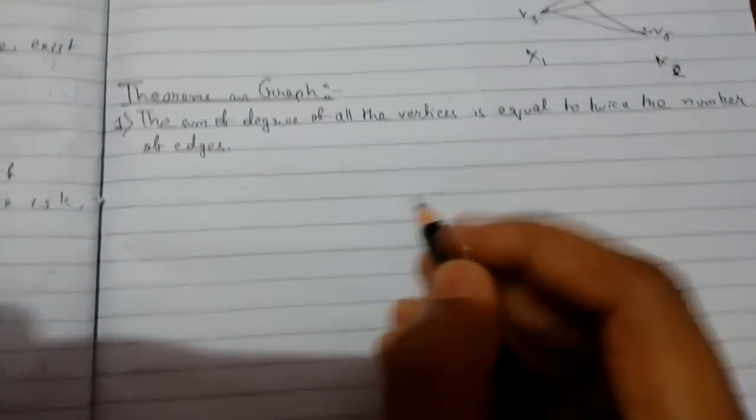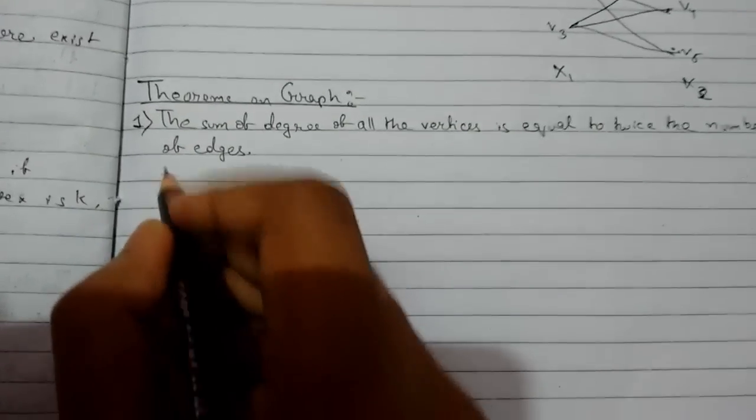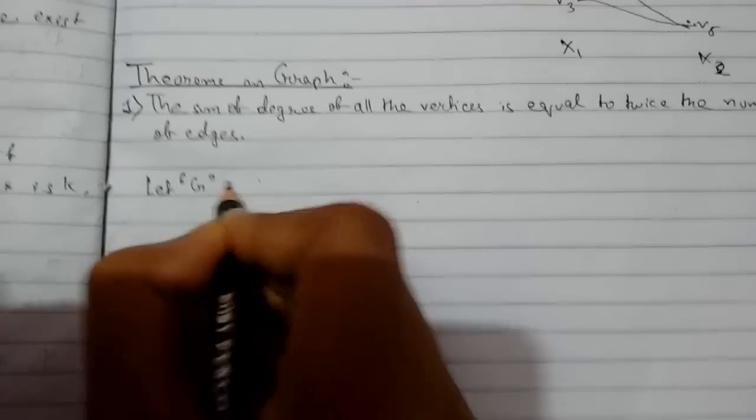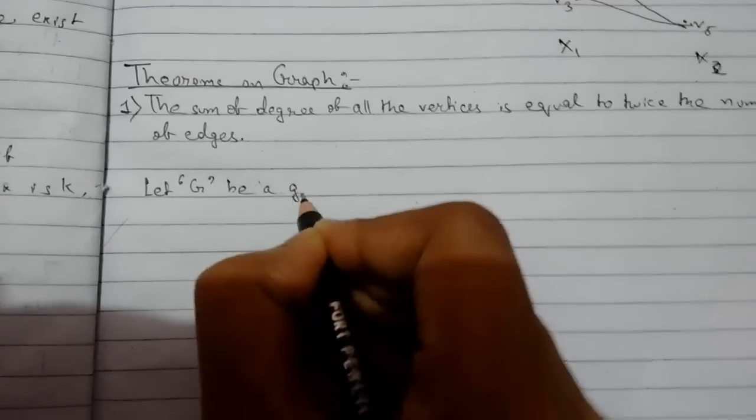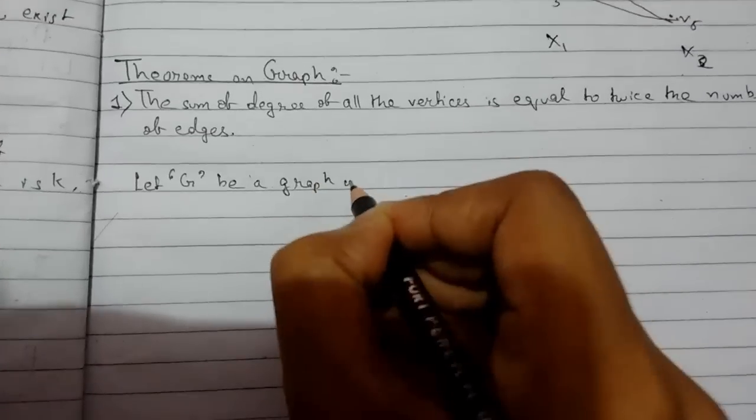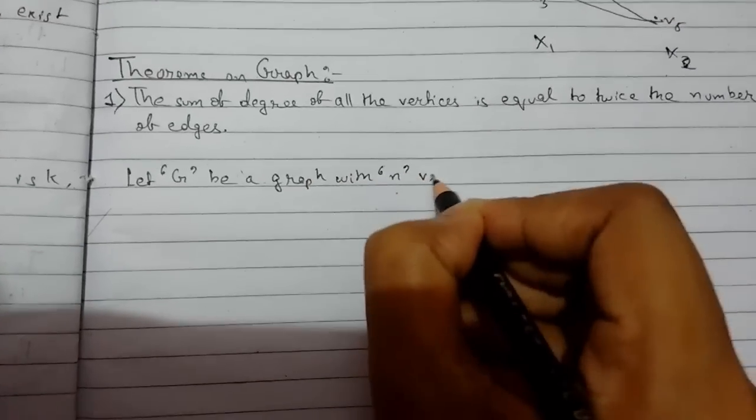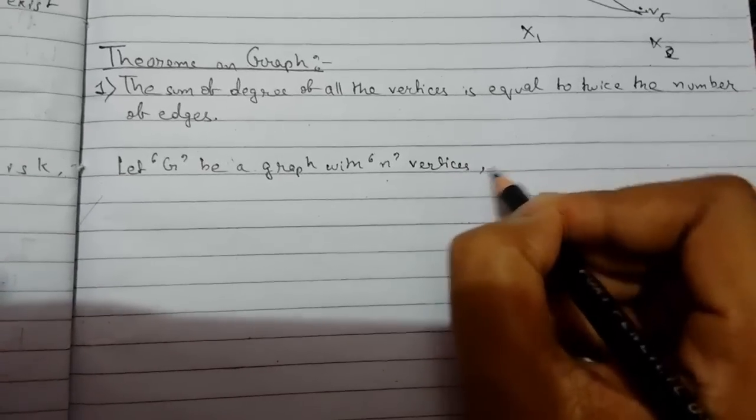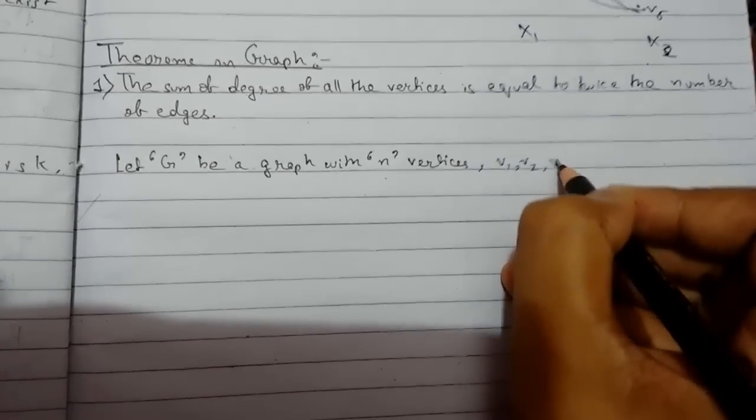So let us prove this theorem. Let G be a graph with n vertices, that is v1, v2, v3 up to vn, with m edges.